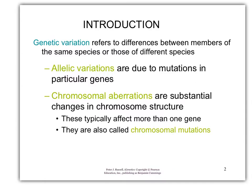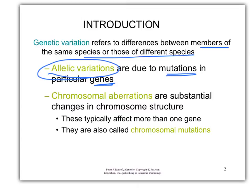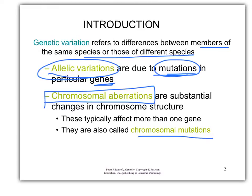Genetic variation can be the difference between members of the same species or different species. Allelic variations are always mutations in particular genes of the same species — those are what we classically talk about as mutations. Major changes in chromosomes, or chromosomal aberrations, change the entire chromosome structure. They can be called chromosomal mutations, but they're such a big change that they're generally a little different than what we consider a mutation. A mutation is usually a base pair change; this is an entire change in a chromosome.